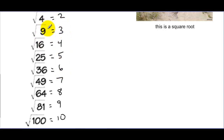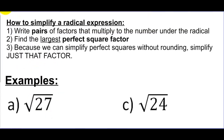2 squared, 3 squared, 4 squared — in this case I stopped at 10 squared, but we could keep going. So the purpose of our unit today is to work with these numbers and try to use this to our advantage. We're going to start off by simplifying radical expressions.